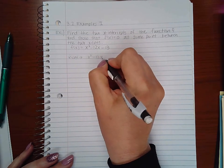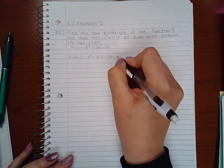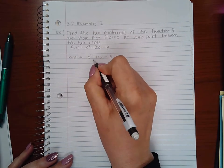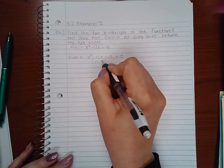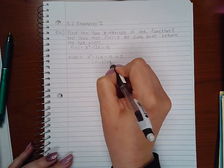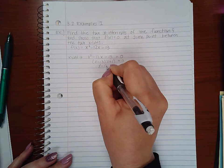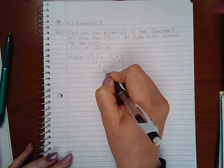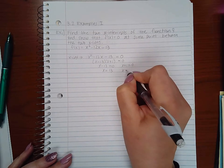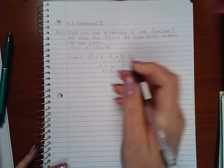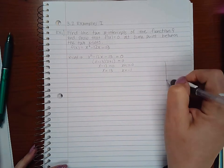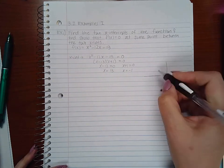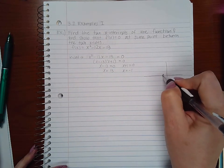Since x-intercepts occur when the y value is zero, if I factor this function I get x minus 13 times x plus 1. And if I set each factor equal to zero, I will get the two x values: x equal to 13 and x equal to negative 1.